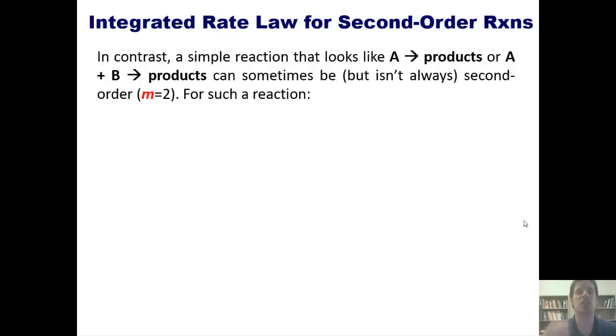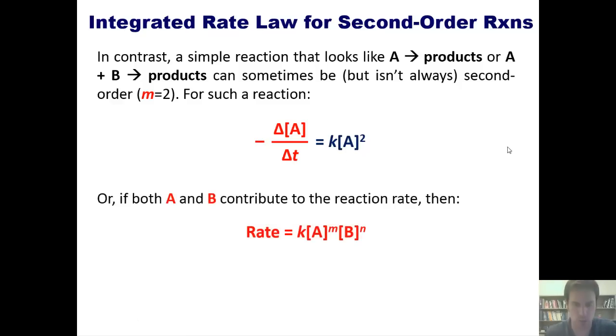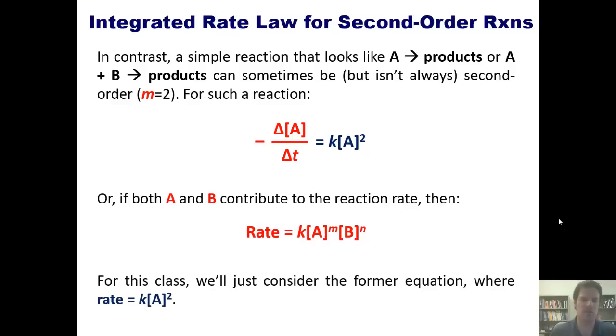Let's contrast that with a second order reaction. In contrast, a simple reaction that looks like A going to products or A plus B going to products can sometimes, but isn't always, be a second order reaction, in which the exponent is equal to 2. For such a reaction, this equation holds true, which once again blends an element from the relative reaction rate law equation with the general rate law equation. Or in contrast, if both A and B contribute to the reaction rate, as in this scenario where M and N are both 1, it's second order overall, you can get something different. For this class, however, we'll just consider the first equation up here, where I've got K times the concentration of A squared as the right-hand component.